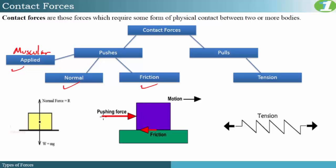As you push the box in one direction, motion would be in that direction and friction would act opposite to that motion. Friction always acts in such a way that it opposes the force causing it. Normal force is simply the reaction of a surface to a force which is applied to or in contact with it.